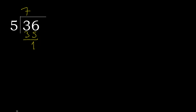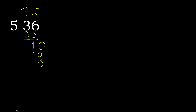That is not a whole number, therefore complete. Always complete with 0 here, with a point. 0 point. 10. 5 multiplied by 2 is 10. 10 minus 10 is 0. Finish it.